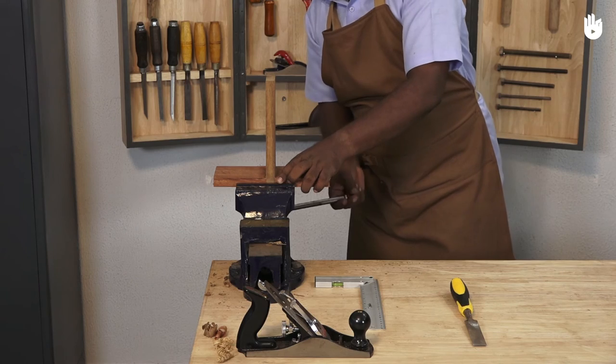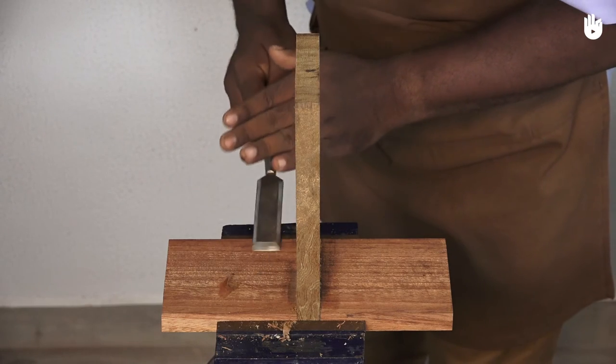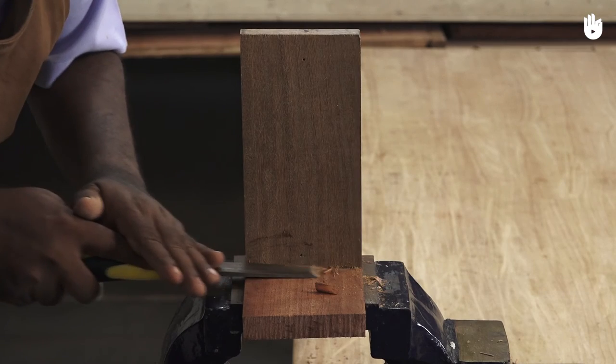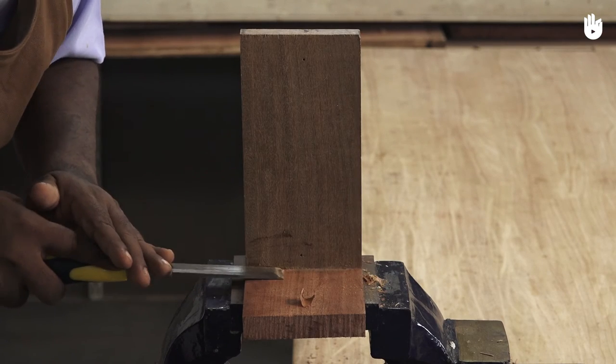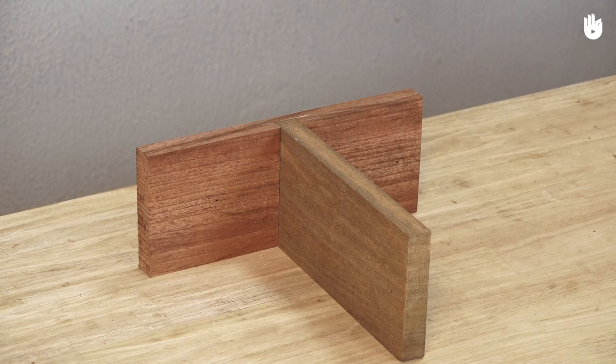Now turn the joint over so that you can clean the corners. Use a bench chisel to pair along the corners until you have a smooth finish free of dried glue or splinters. You have now learned how to make a full housing joint.